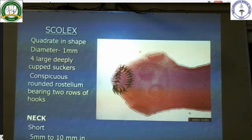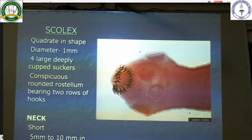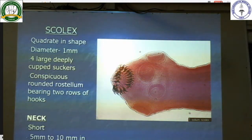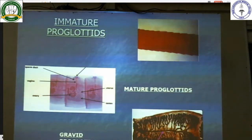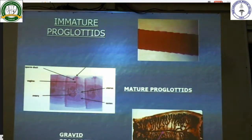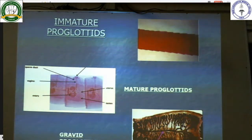The scolex is quadrate in shape with a diameter of 1 millimetre. It has 4 large cupped suckers and a conspicuous rounded rostellum bearing 2 rows of hooks. The neck is short, about 5 to 10 millimetres in length. The body has proglottids: there are mature proglottids, immature proglottids, and gravid proglottids which contain the eggs.